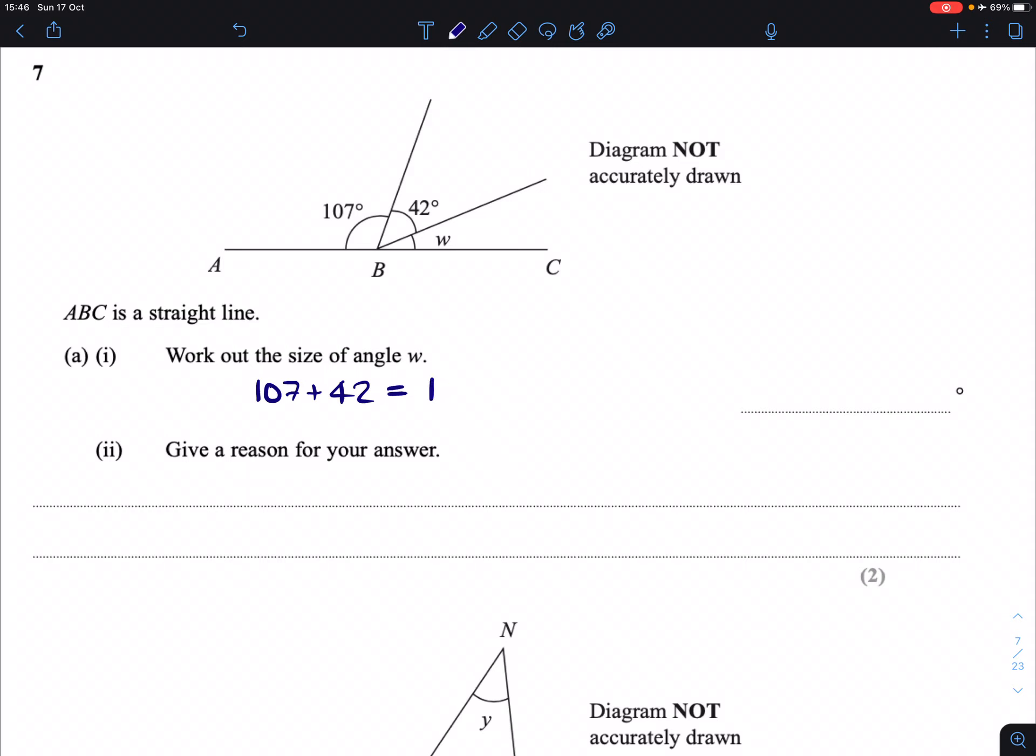If I add these together to get 149 and then take that away from 180, I get 31. So 31 is the size of angle W.